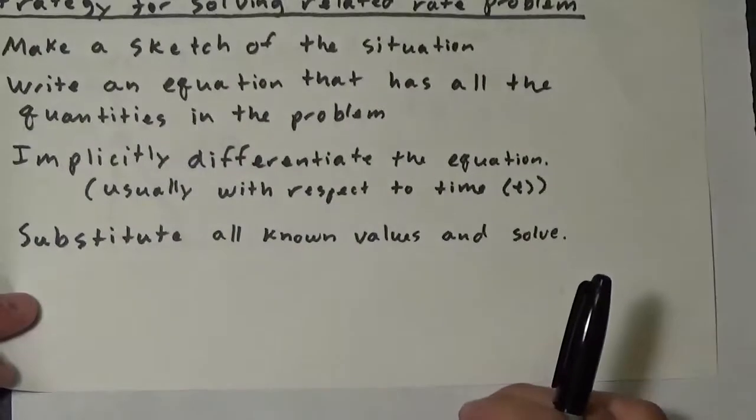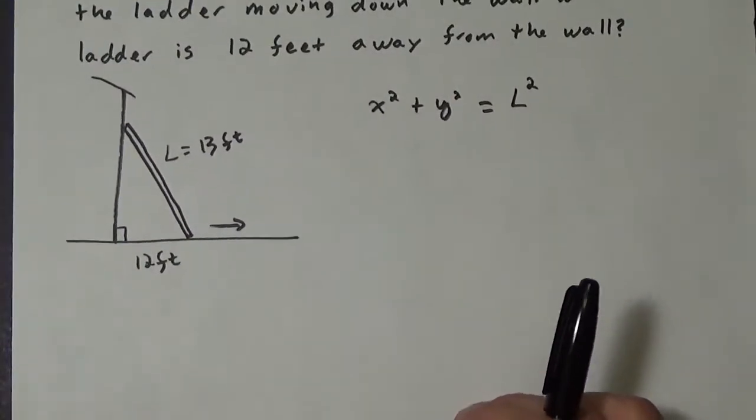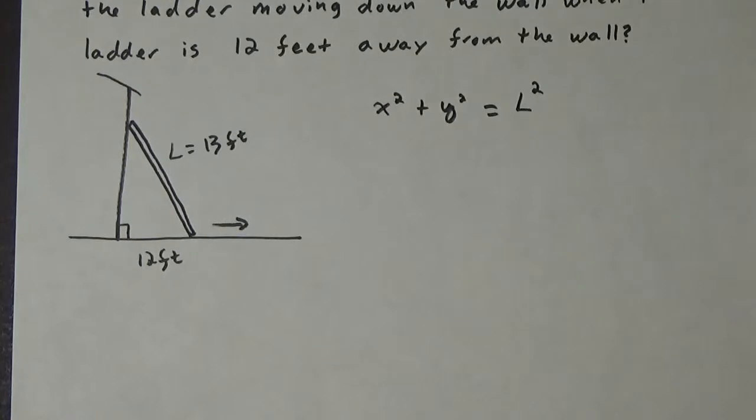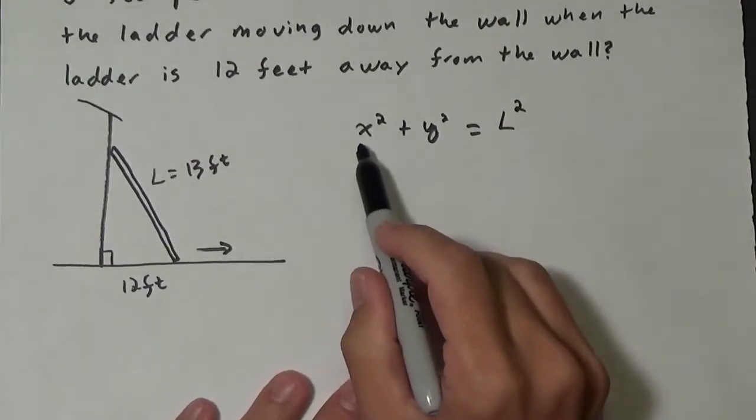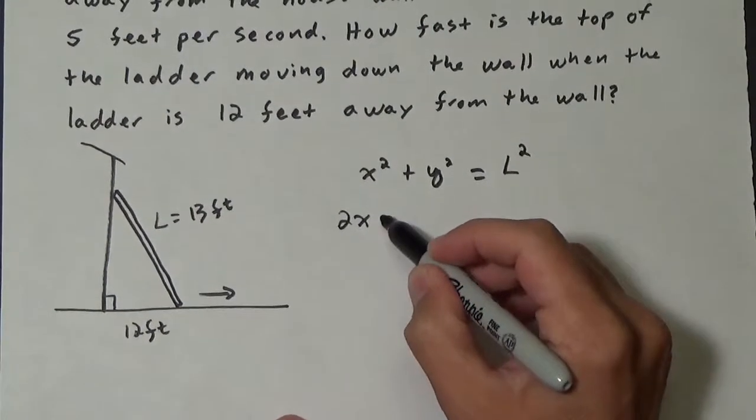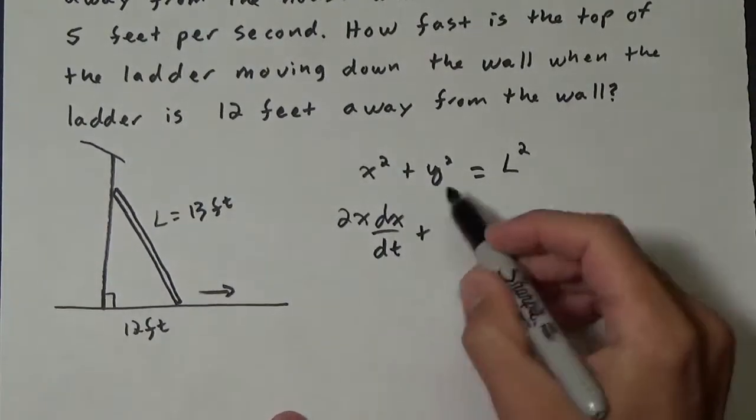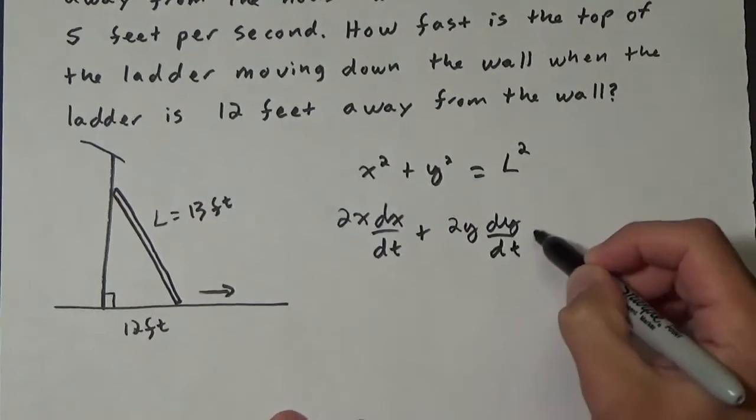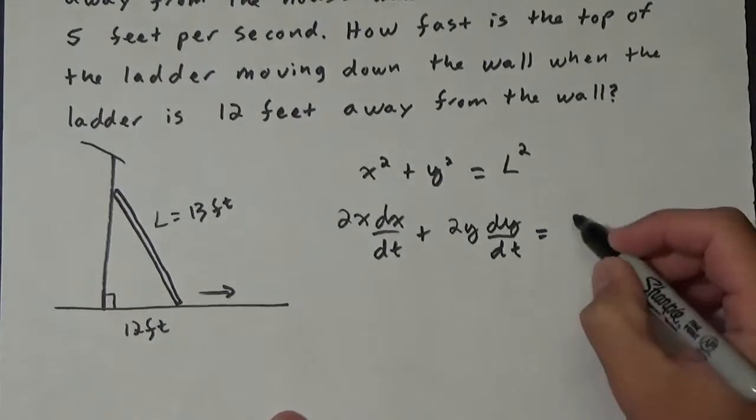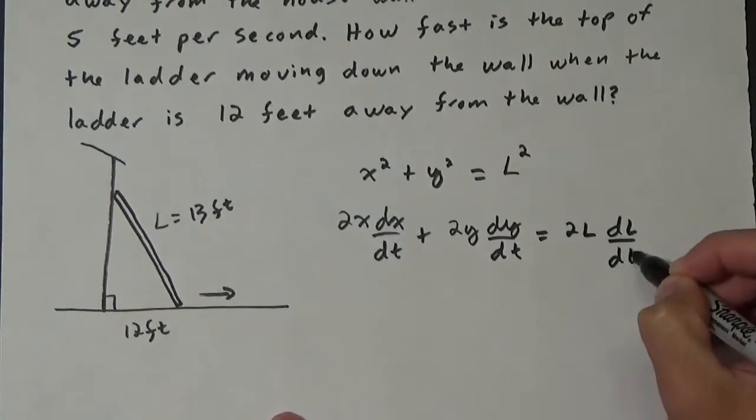Now we're going to implicitly differentiate the equation, and we are going to do it with respect to t. So let's go ahead and implicitly differentiate this. So the derivative of x squared is 2x dx/dt. The derivative of y squared is 2y dy/dt. And the derivative of L squared is 2L dL/dt.